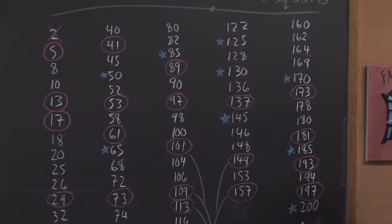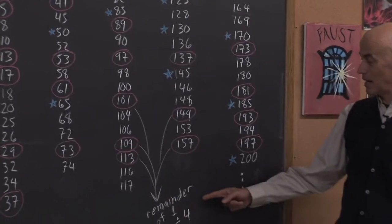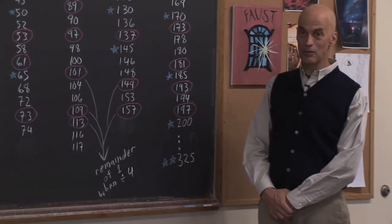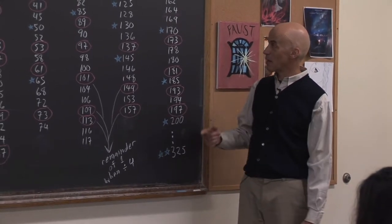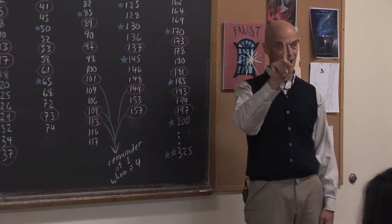If you have a prime number and you get a remainder of one when dividing by four, you can express it as a sum of two squares and exactly one way.